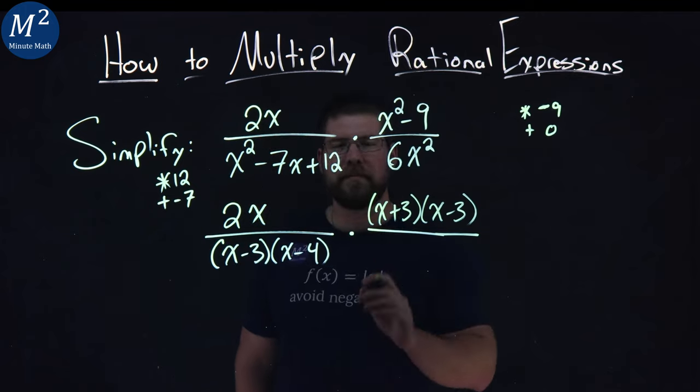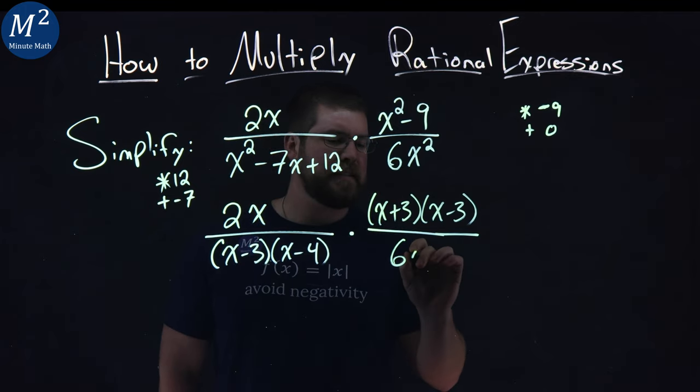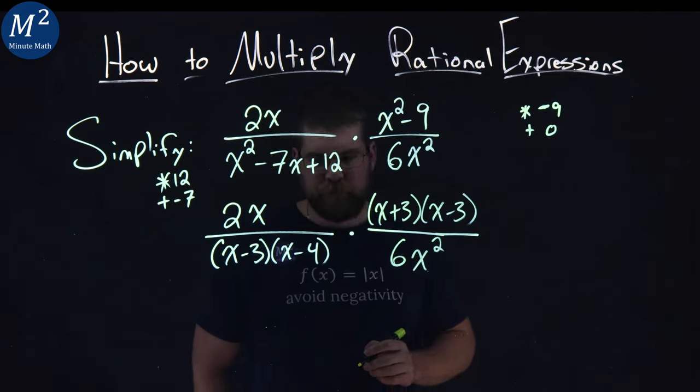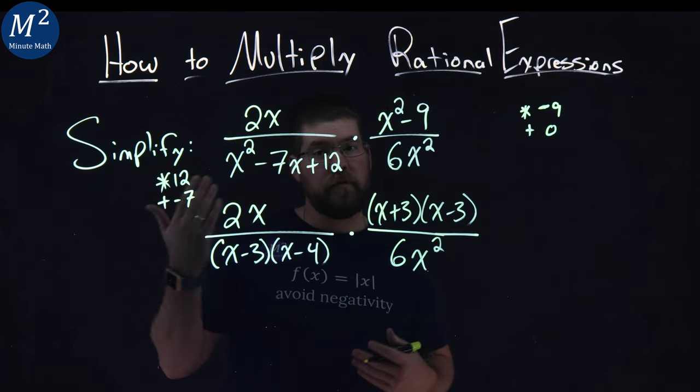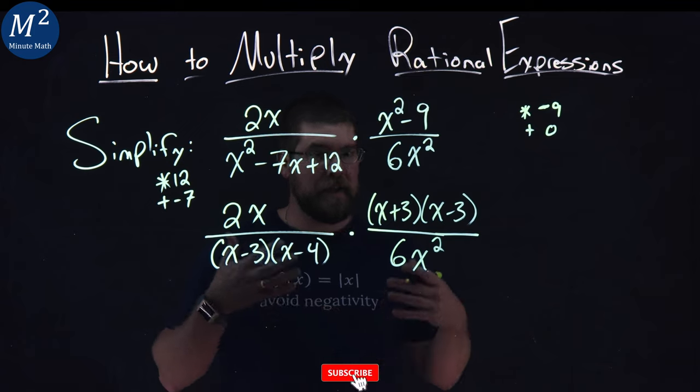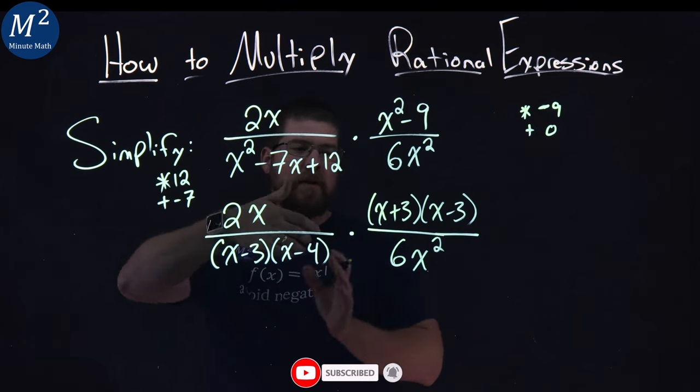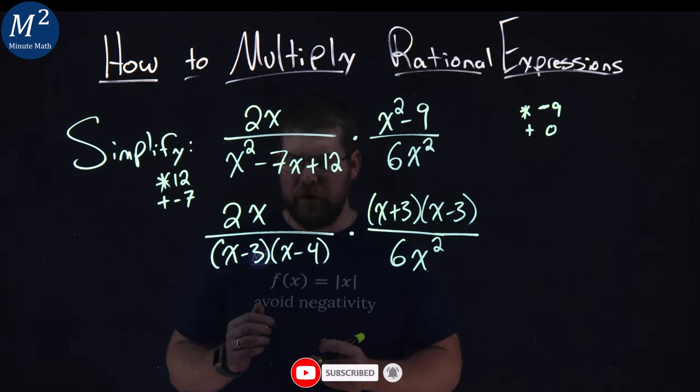The denominator, I can't really simplify anymore, 6x squared. All right, now with multiplication here, we can multiply across the numerators and across the denominators, just like any other fraction. So I'm going to do that and kind of reorder, line some things up here.